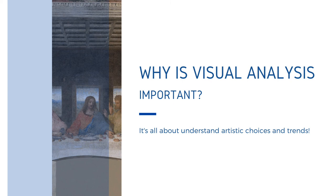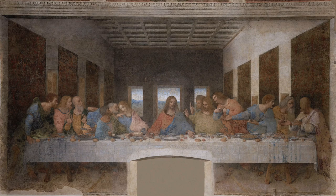Before I dive into an example of a visual analysis, it's important to understand why they are so important. Visual analysis is a foundational practice in art history. Not only does it help us understand the deliberate choices made by the artist to create the scene for the viewer, but it also helps us see historical trends and individual elements and styles of these artists. Visual analysis has become a way for art historians to track the timeline and understand how human creativity has developed over time.